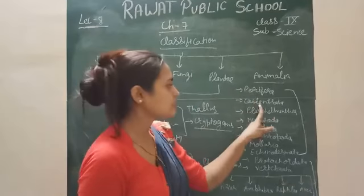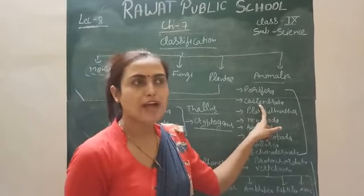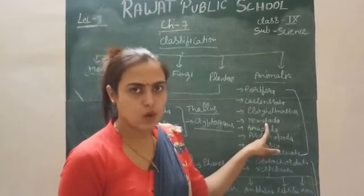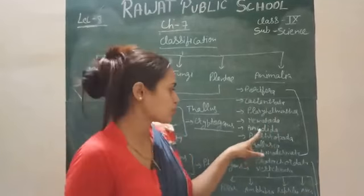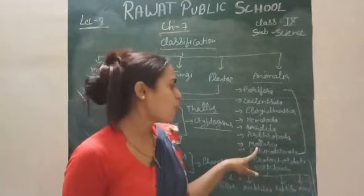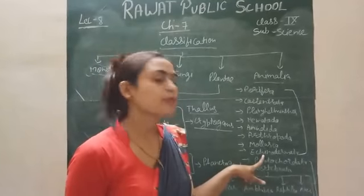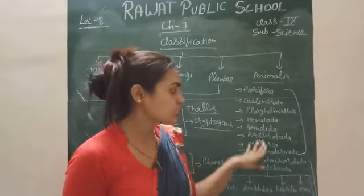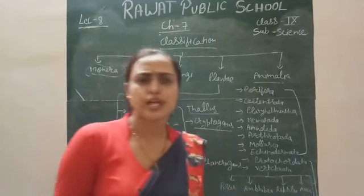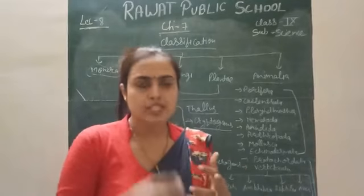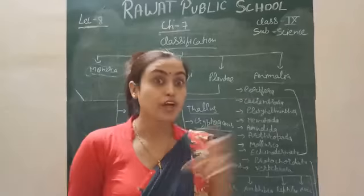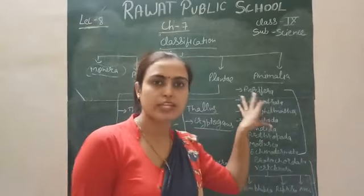A quick review: Porifera have pores. Cnidaria have the capability of bioluminescence — they produce light in water. Platyhelminthes have a flat structure. Nematoda are round-bodied. Annelida — their body consists of rings, divided into small segments. Arthropoda have paired appendages. Mollusca have a soft body covered by a shell. Echinodermata — their body consists of spine-like structures. These are the important distinguishing points of each phylum. Common points include triploblastic or bilateral symmetry, coelomate or non-coelomate, level of organization, type of excretion, and open or closed circulatory system.